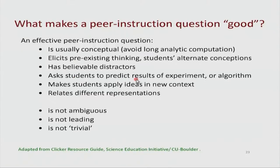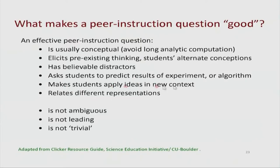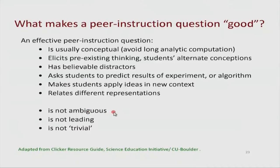Peer instruction is based on students' existing thinking. After years of teaching practice you know the difficulties students face. The distractors in a PI question should be believable — do not make only the right choice believable and all others nonsense. Good peer instruction questions ask students to predict results of an experiment or a program, or to apply ideas in a new context — for example, the probability question placed a familiar concept in a new real-life context. The question should not be ambiguous, should not give away the right answer, and should not be trivial.